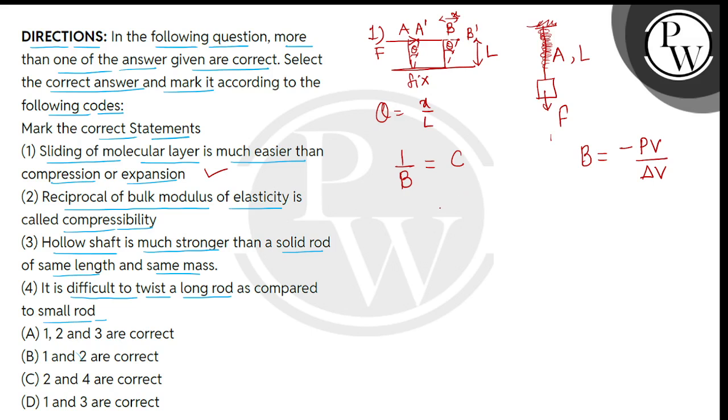And we measure the compressibility. We just take this reciprocal. So, this will be del V divided by PV. Here, we have considered magnitude. So, we get the product of bulk modulus and compressibility is equal to 1. So, statement number 2 is correct.